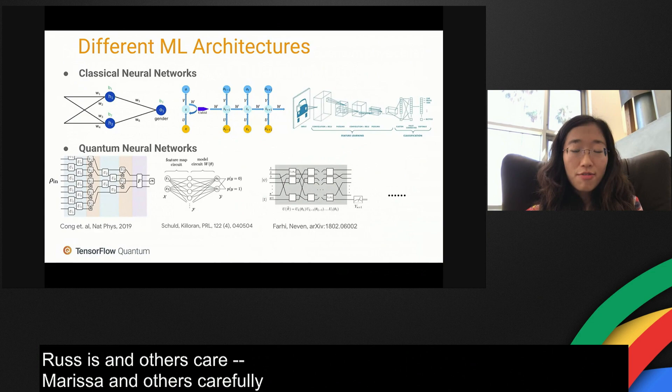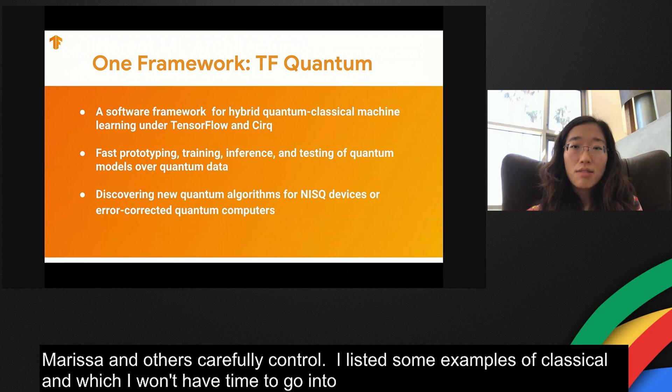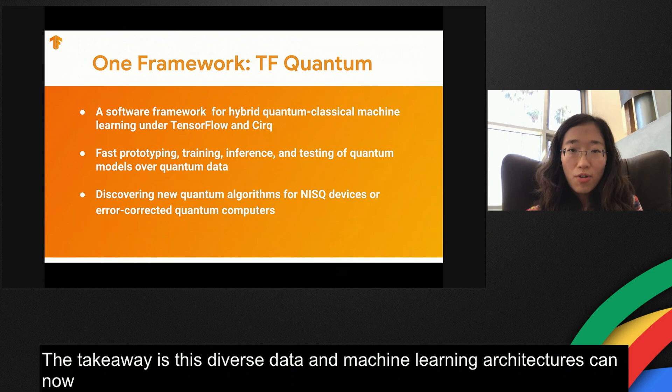These diverse kinds of quantum data can be fed into equally diverse machine learning architectures to extract useful information and make predictions. I listed some examples of classical and quantum machine learning architectures here, which I won't have time to go into detail. But the takeaway is this diverse data and machine learning architectures can now be united under one framework, TensorFlow Quantum.